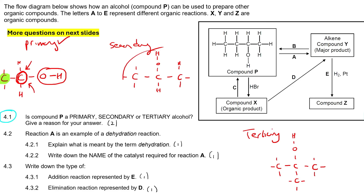Let's move on to this one. I want you to look at the OH, then the carbon touching it, and then how many carbons are touching that carbon. Well, that would be here and here — so that's two. So we call that secondary.